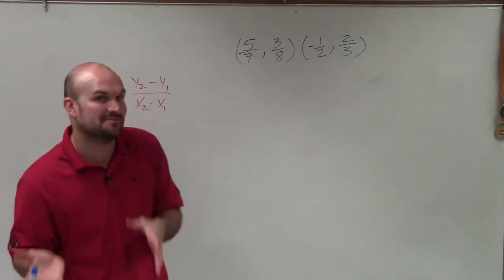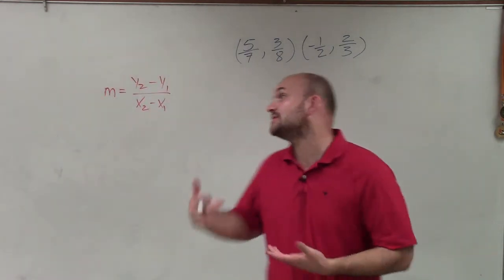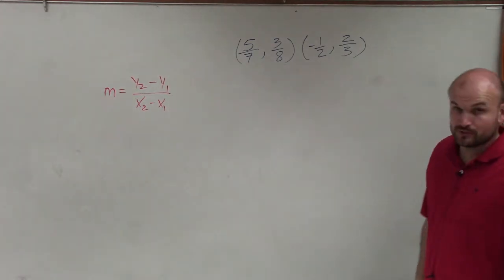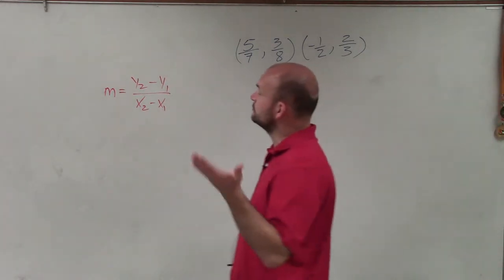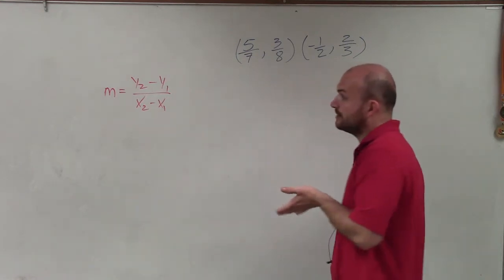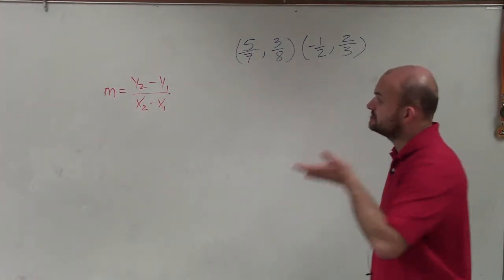So we've got to make sure we understand the slope formula, which I left up here, which says m, which we represent as slope, is equal to the change in y, y2 minus y1, divided by the change in x, which is x2 minus x1.